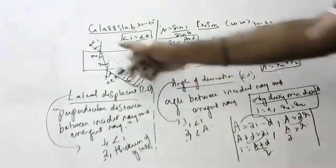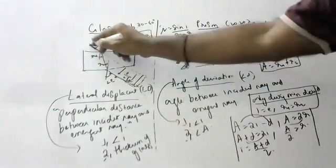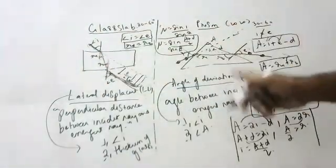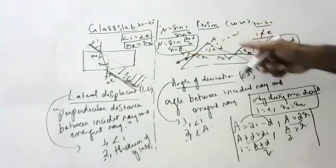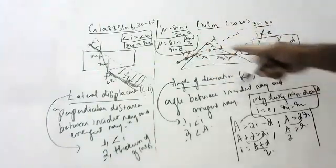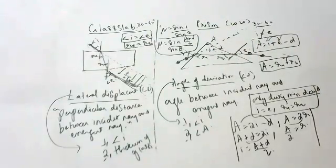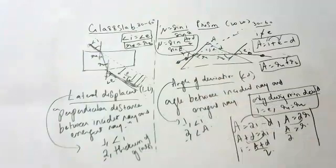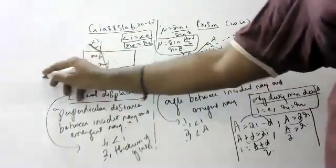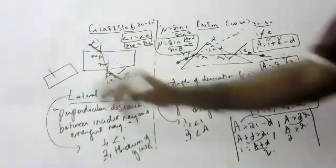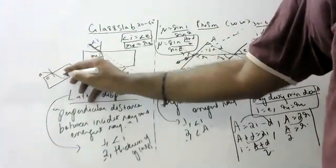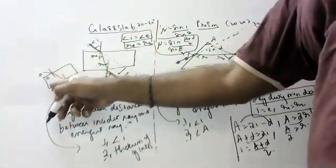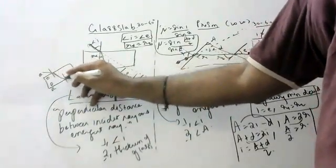The purpose of the glass slab activity is to show that angle of incidence equals angle of emergence because the two faces are parallel — they are parallel surfaces. For the prism, we show A equals i plus e minus D and A equals R1 plus R2. Remember: rare to denser medium means bending towards the normal; denser to rare means bending away from the normal.